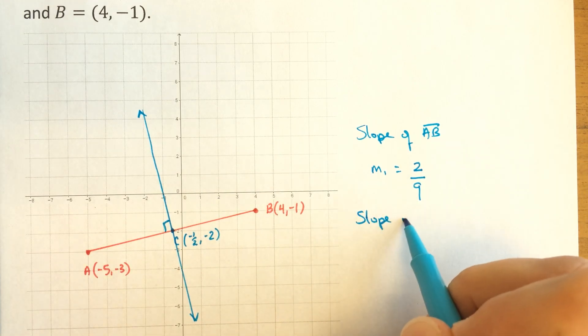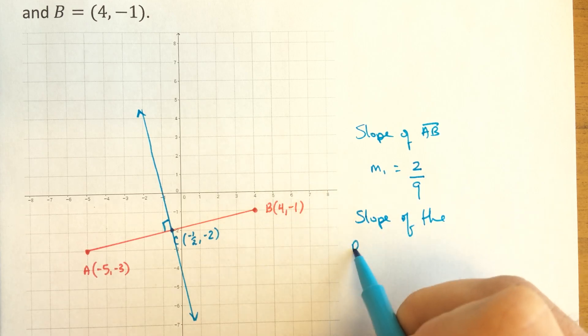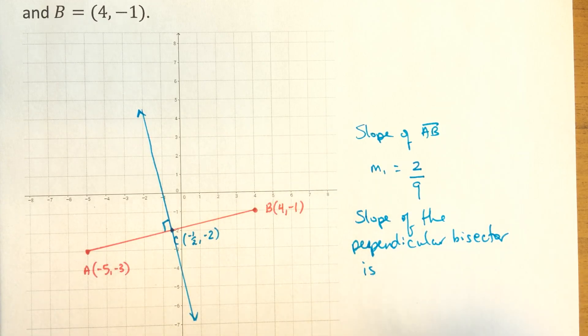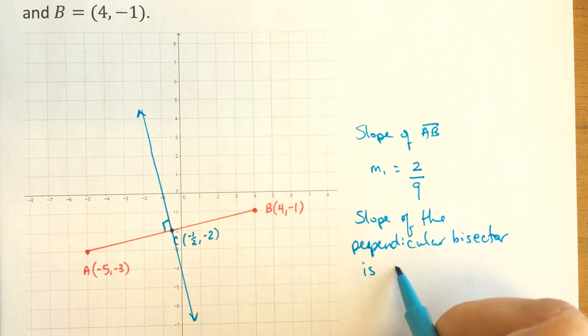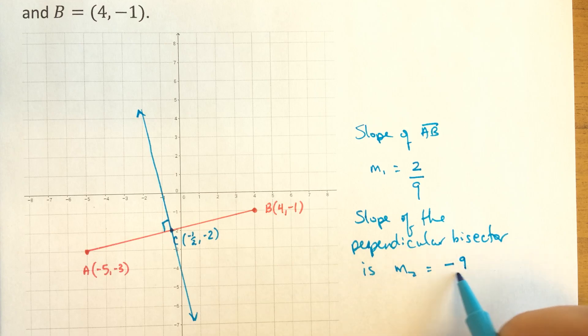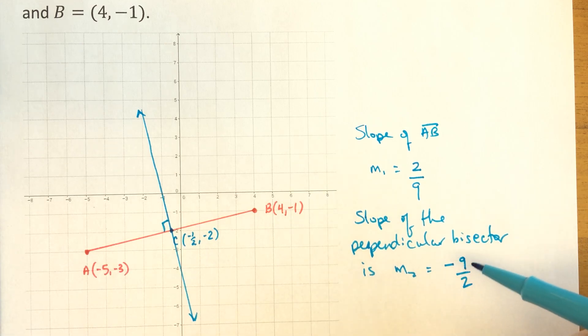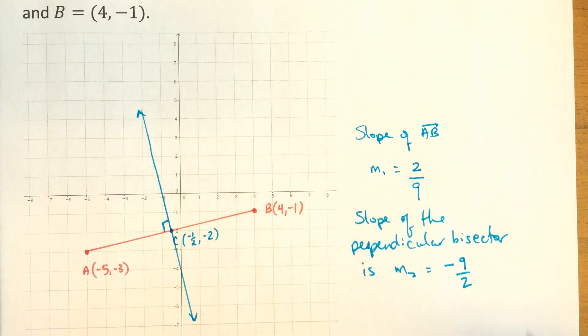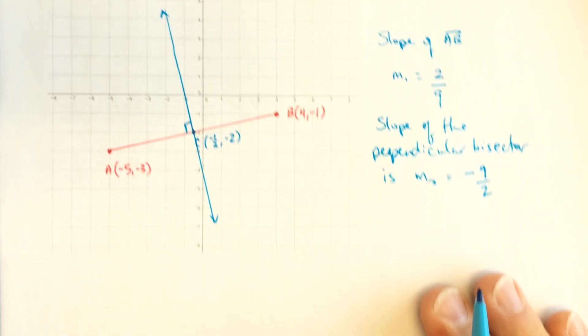That means the slope of the perpendicular bisector is the negative reciprocal of this. And I'll call it M2. And that will be equal to negative nine halves. It's negative and flip this over. These two things multiply together to give you negative one.